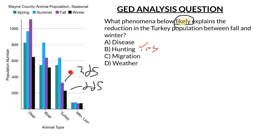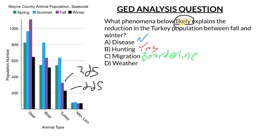Migration is also a possible answer — the turkeys could have simply migrated. But we don't specifically know that from the chart. When you think about it, there's no information here about turkeys and migration, and the population only dropped by about 100. If you really think it through — why didn't more turkeys migrate? So that's what I'd call a borderline answer: it has some merit, but not total merit. And then the last option is weather, but we don't have any information about weather either.